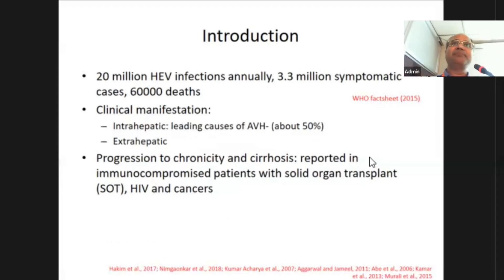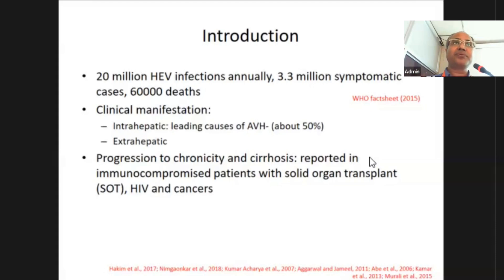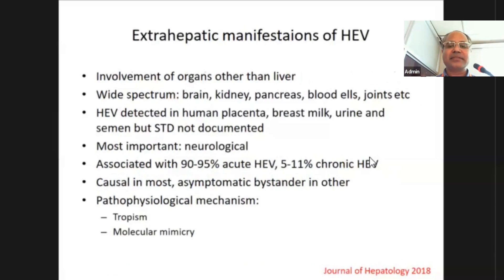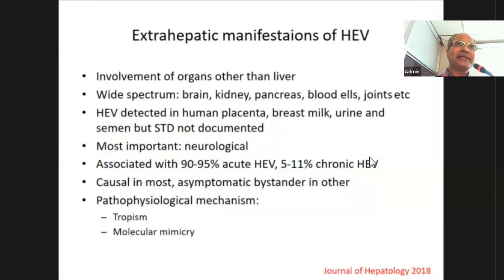HEV is causing more than 50 percent of all acute viral hepatitis cases. It is now proven that it is causally associated with extra-hepatic manifestations. A recent concept seen within the last two decades is that HEV may progress to chronicity very rapidly and go to cirrhosis, specifically in solid organ transplant, immunosuppressed patients, and cancer patients. We will now discuss extra-hepatic manifestations of hepatitis E.